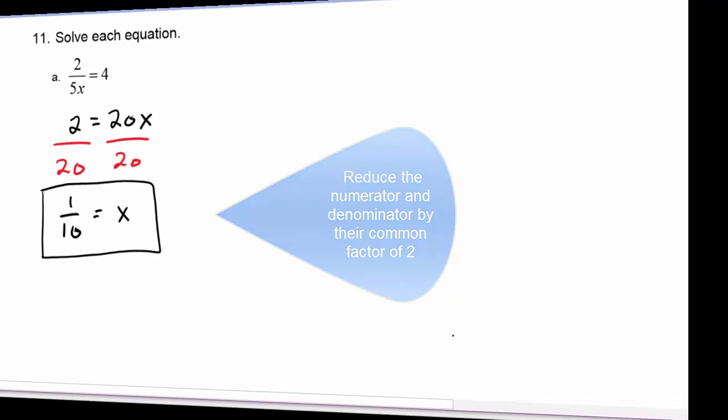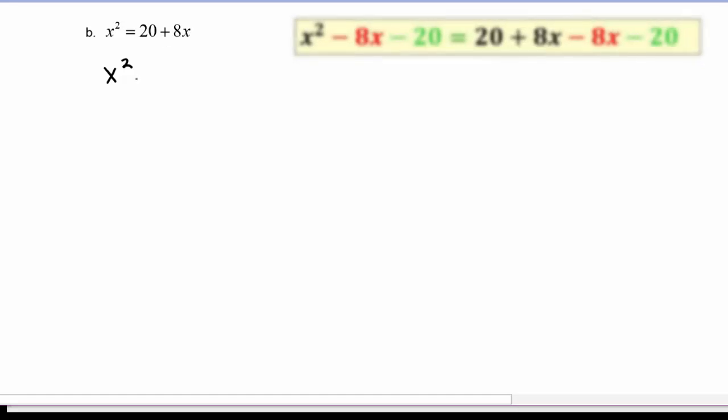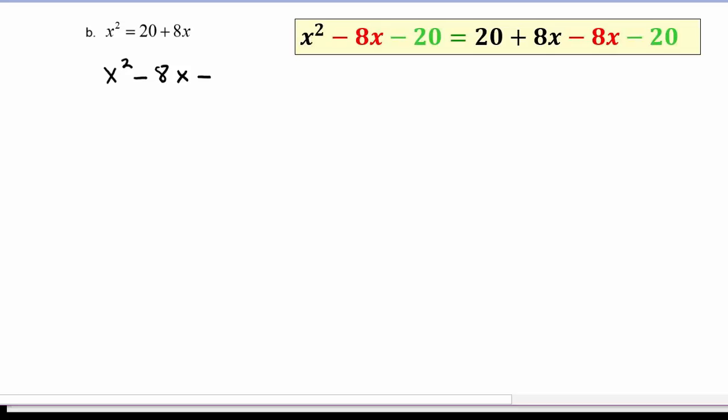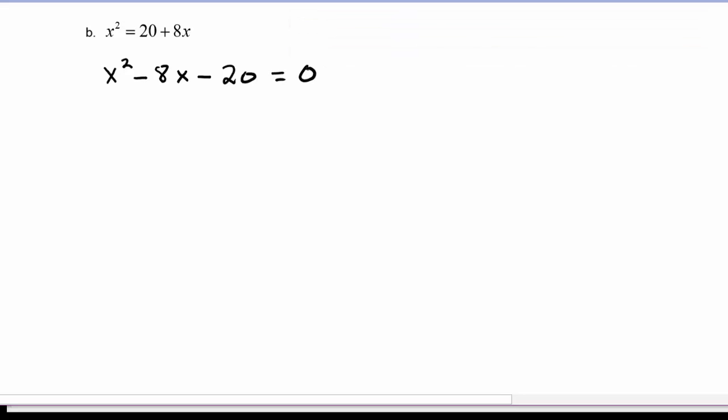Moving on to example B. We have a quadratic, x squared is equal to 20 plus 8x. So the first step is to get everything on one side. We'll leave the x squared where it is because it's positive. We're going to subtract the 8x from both sides, so this will become minus 8x on the left hand side. And we have to subtract 20, and then the right hand side is now 0.